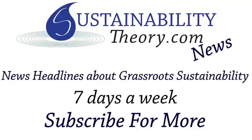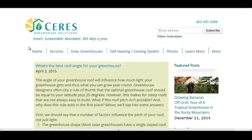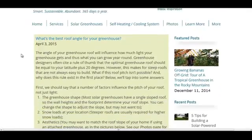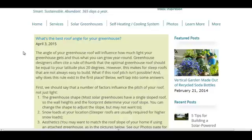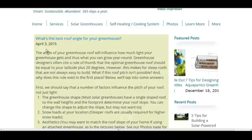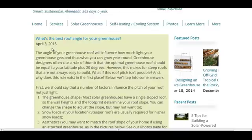Hello, Carl here with Sustainability Theory News. We're over at Ceres Greenhouse Solutions, builders of greenhouses. They've got an article here on the best roof angle for your greenhouse. The standard rule is your latitude plus 20 degrees.